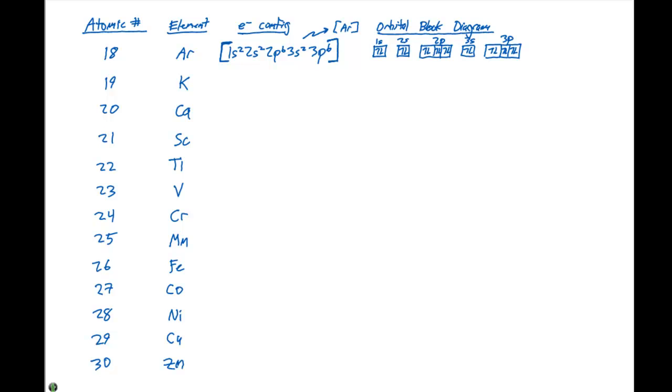So when I write out the electron configuration for potassium I can say argon 4s1. So that's going to say to other chemists hey we have 1s2, 2s2, 2p6, 3s2, 3p6 then 4s1. So rather than write out this entire electron configuration right here I can simply represent that in brackets like this.